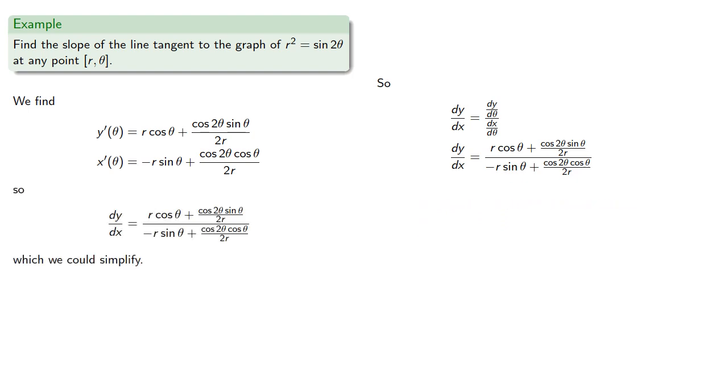And because this is a compound fraction, we should probably simplify this. If we multiply numerator and denominator by 2r we'll get... And we can go one step further. We know that r squared is sine of 2 theta, and so we can get our final answer...